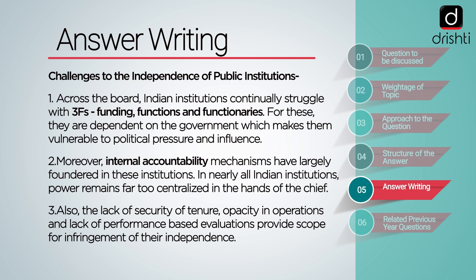Challenges to the independence of public institutions: Across the board, Indian institutions continuously struggle with the three Fs — funding, functions, and functionaries. For these, they are dependent on the government, which makes them vulnerable to political pressure and influence. Moreover, internal accountability mechanisms have largely floundered in these institutions. In nearly all Indian institutions, power remains far too centralized in the hands of the chief. Also, the lack of security of tenure, opacity in operations, and lack of performance-based evaluations provide scope for infringement of their independence.